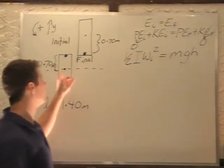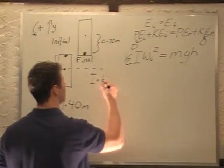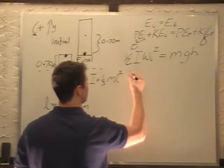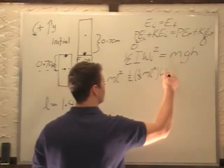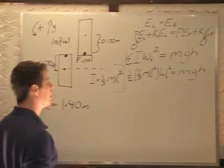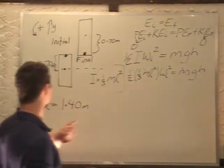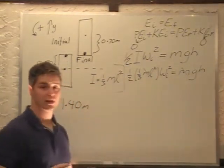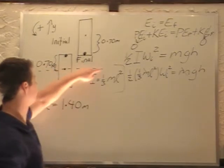I for a slender rod, which is what we have, is one-third ml squared. So we can plug that in, giving us one-half of one-third ml squared omega initial squared equals mgh. What do we know in here? Masses are actually going to divide out. Our length is going to be this 1.4 meters, that's how big the rod is. Omega initial is actually what we're looking for. G is a constant.